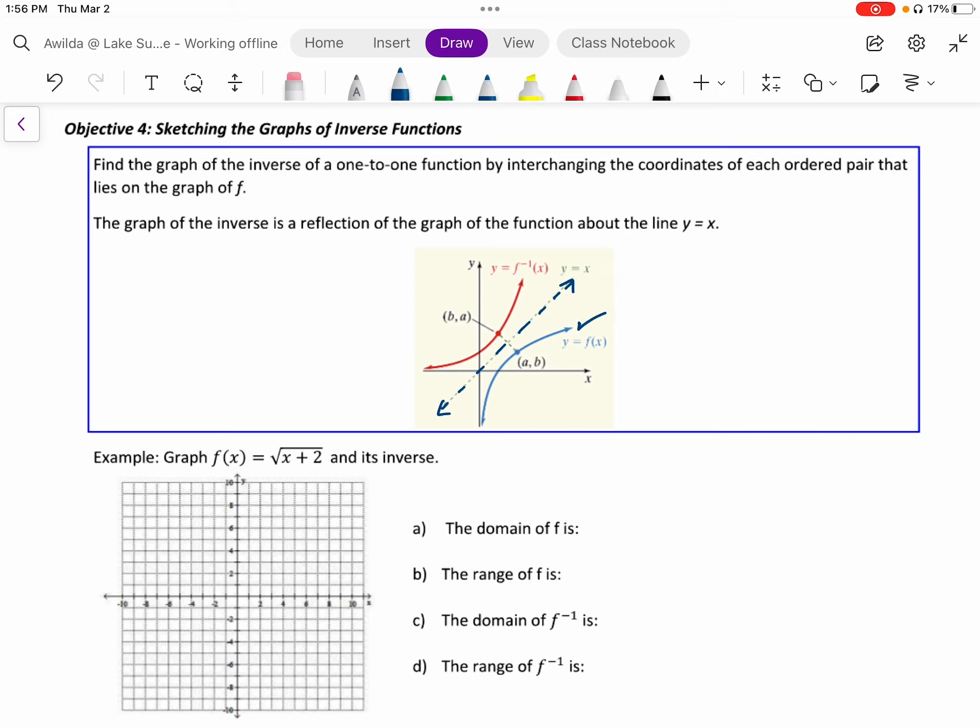Here we have the original f graph and reflected on the other side of that y equals x line is the graph of its inverse. How are reflections created across the line y equals x? It's actually quite simple.